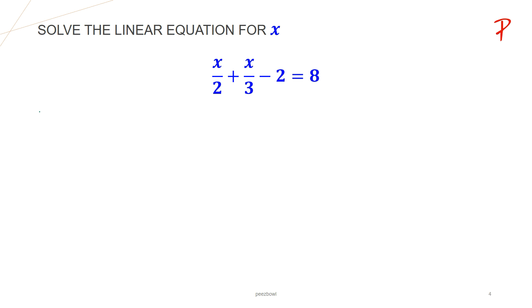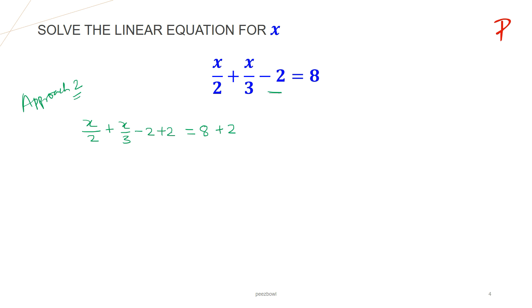Like I said before, there is one more way to find the value of x. Let us see approach 2. In this method, we are going to first remove minus 2 from the left hand side, and after that we are going to solve the fractions. So: x upon 2 plus x upon 3 minus 2 equals 8. In order to remove minus 2, I am going to add 2 to both sides, so that this plus 2 and this minus 2 cancel each other, giving us x upon 2 plus x upon 3 equals 10.